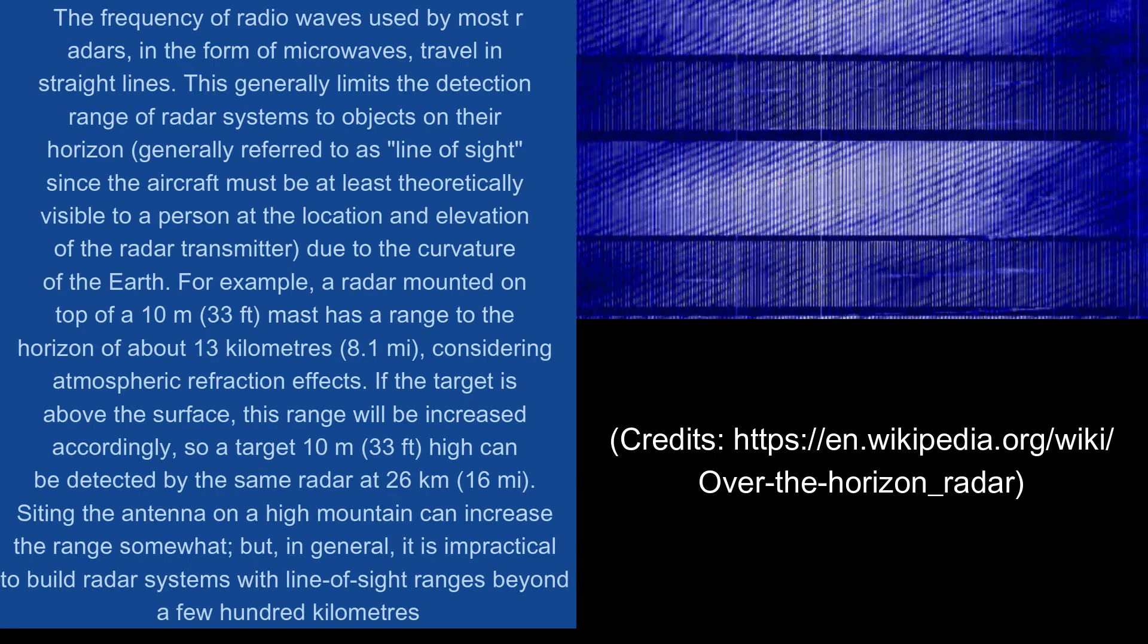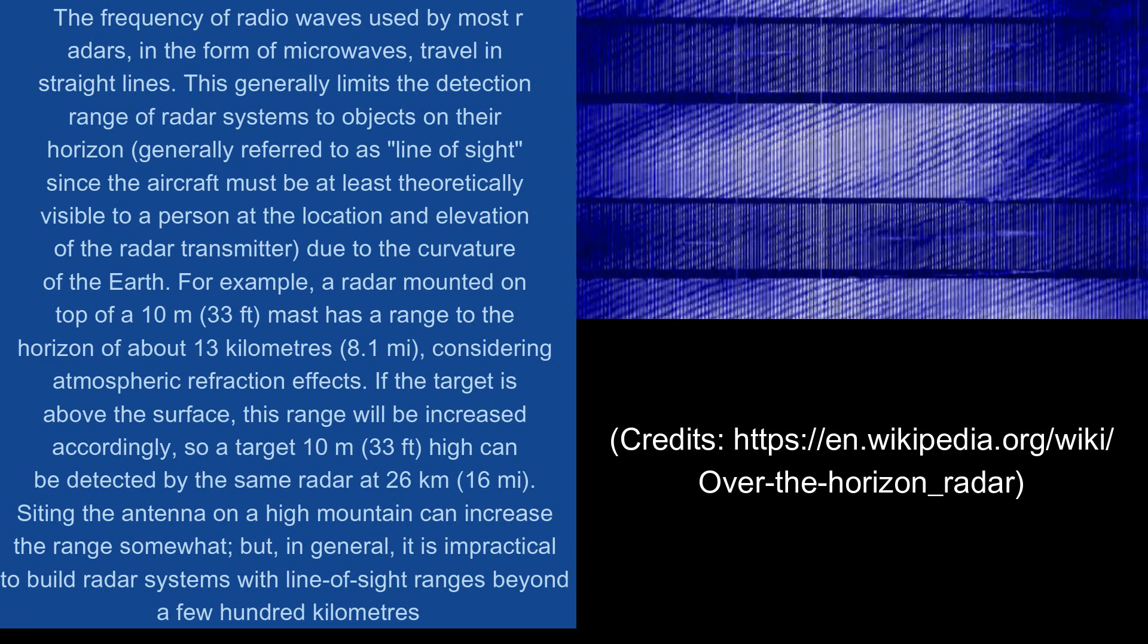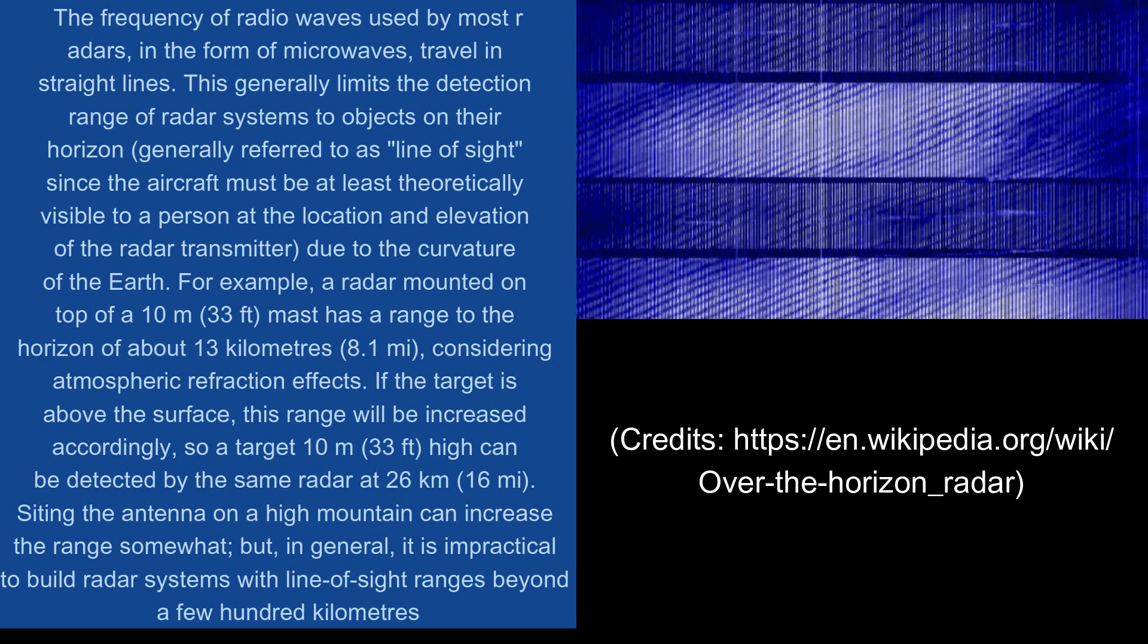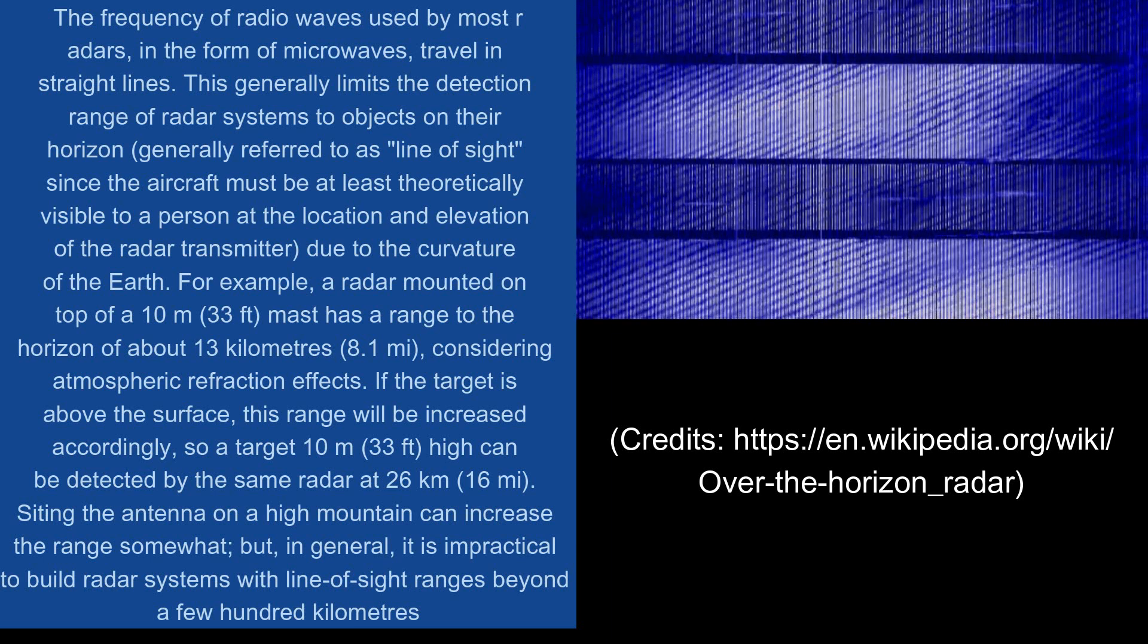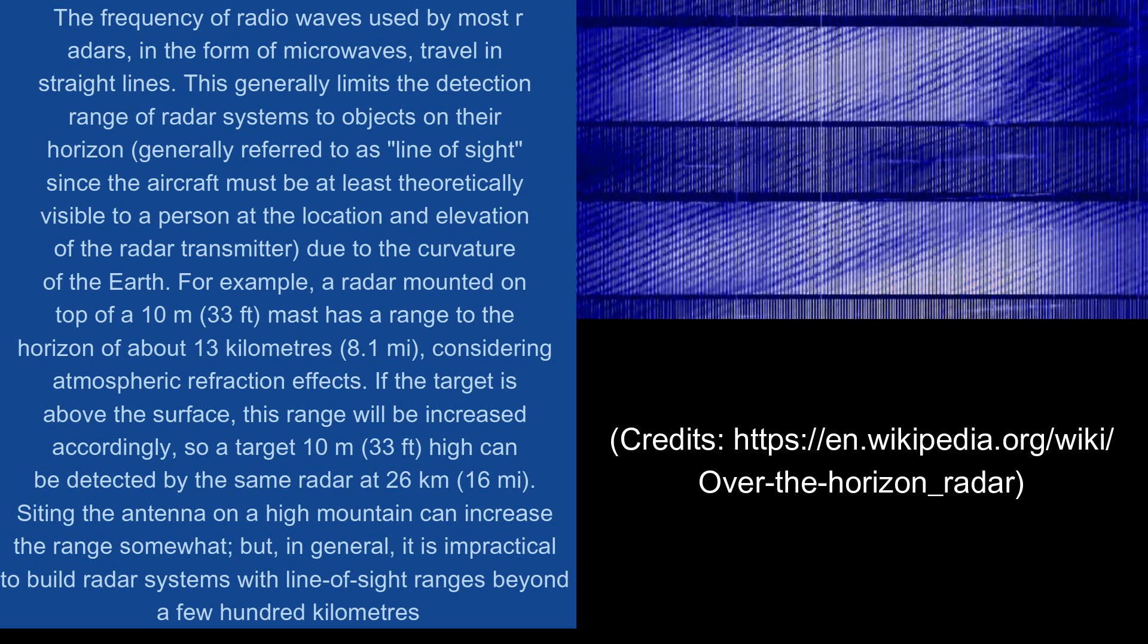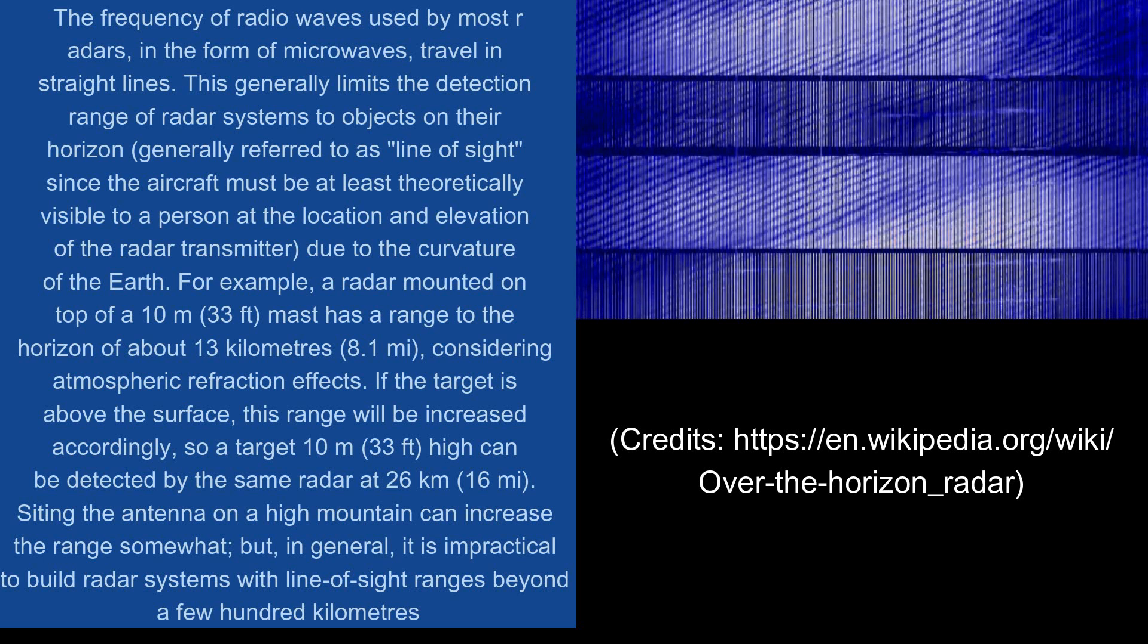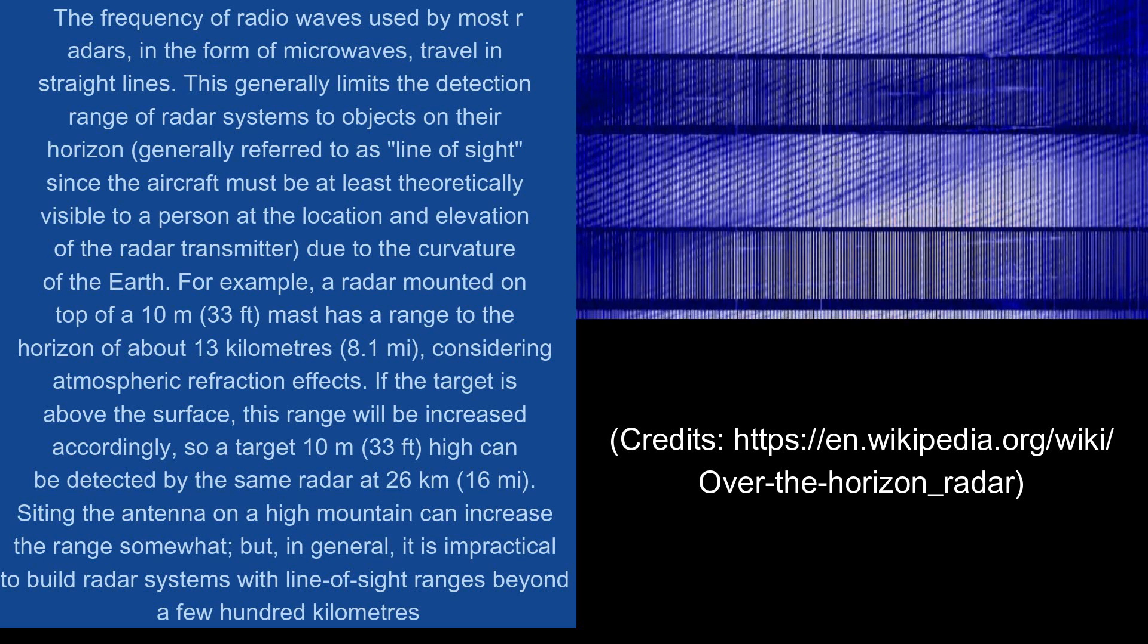The frequency of radio waves used by most radars, in the form of microwaves, travel in straight lines. This generally limits the detection range of radar systems to objects on their horizon, generally referred to as line of sight, since the aircraft must be at least theoretically visible to a person at the location and elevation of the radar transmitter, due to the curvature of the earth.